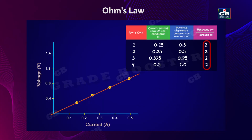The V-I graph has a straight line passing through the origin, which indicates that V is proportional to I, or V by I is constant. What is that constant? That is nothing but resistance R. So, V by I equal to R, V equal to IR, or we can write I equal to V by R.